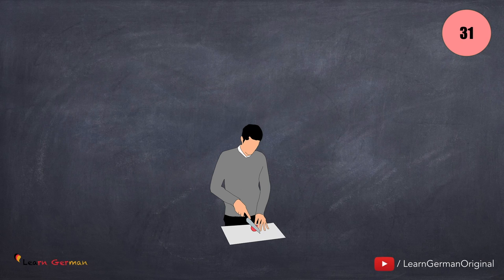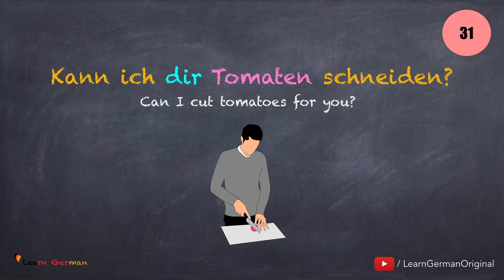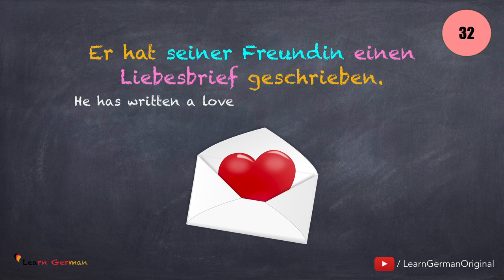Moving on to the next one: Kann ich dir Tomaten schneiden? Jemandem etwas schneiden. You can also use this verb without the dative object.